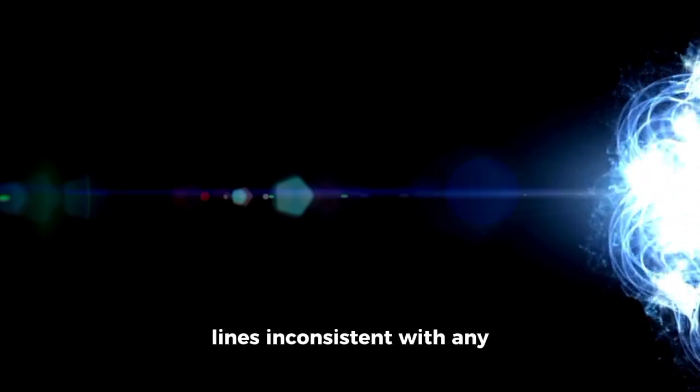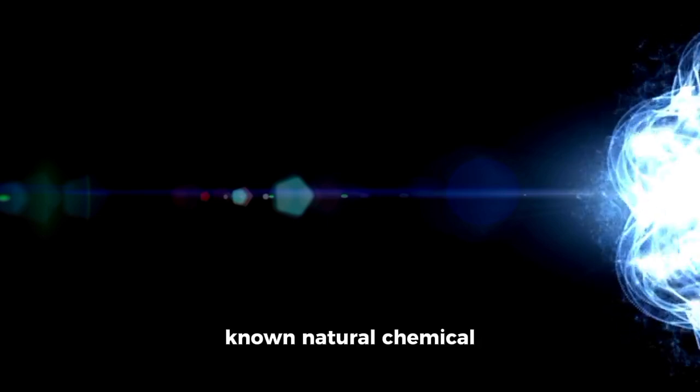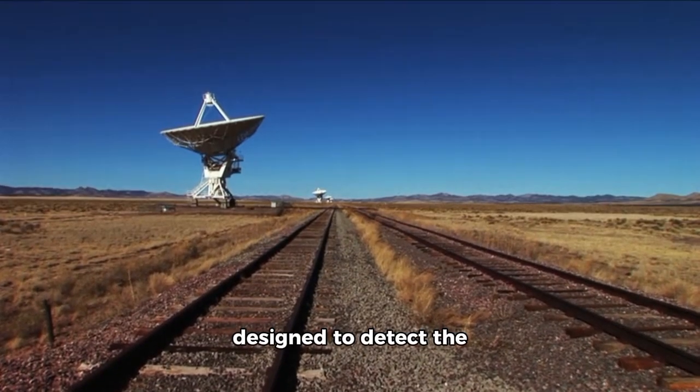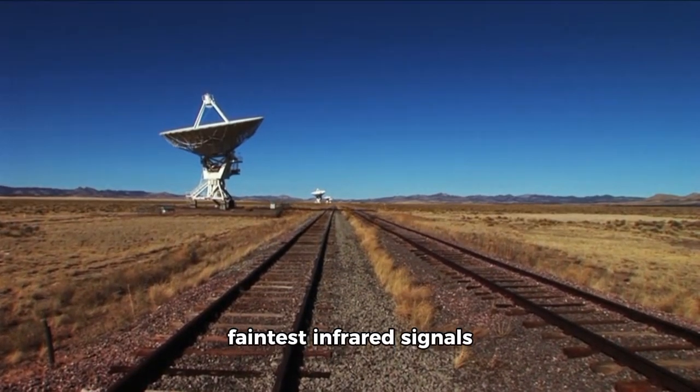The light was barely visible against the background of cosmic radiation, but sufficiently distinct to persist over multiple observation periods. Webb's instruments, designed to detect the faintest infrared signals from the early universe, recorded a consistent signal pattern.